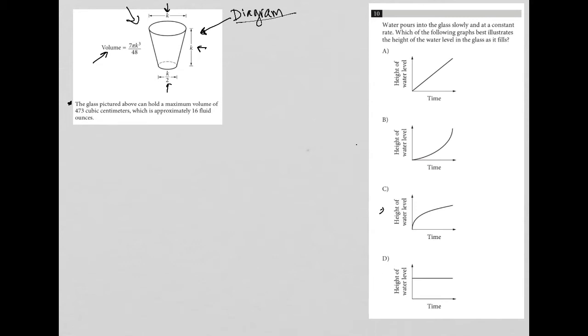Number 10 says water pours into the glass slowly and at a constant rate. So that's probably going to be important - it's slow and constant. Which of the following graphs best illustrates the height of the water level in the glass as it fills? So if we go back to our glass over here, we see that this is a glass that gets wider as you go up.